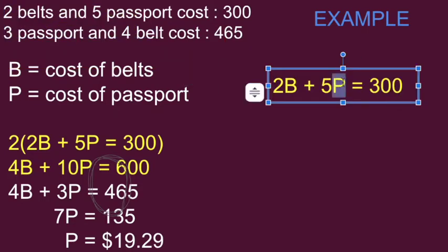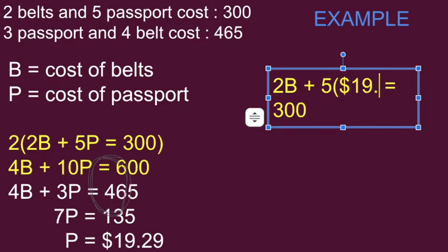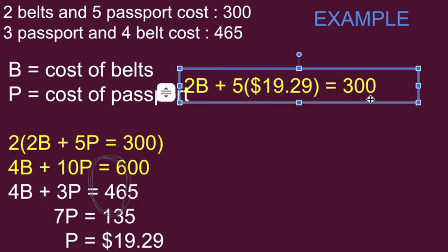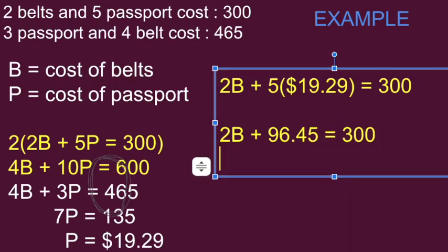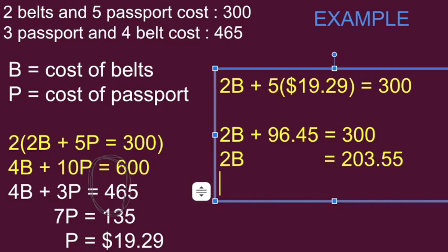We'll work through this: 2B + 5($19.29) = 300. I'm replacing P with $19.29. Two times the price of a belt plus $96.45 equals $300. Subtract that $96.45 from both sides, we got 2 belts equals $203.55, and that means one belt is an expensive belt, going to cost me $101.78.